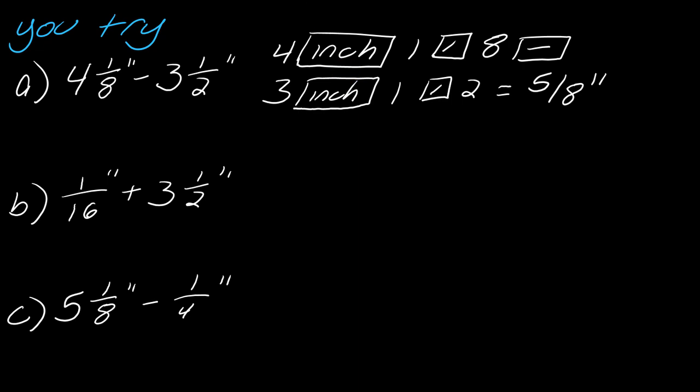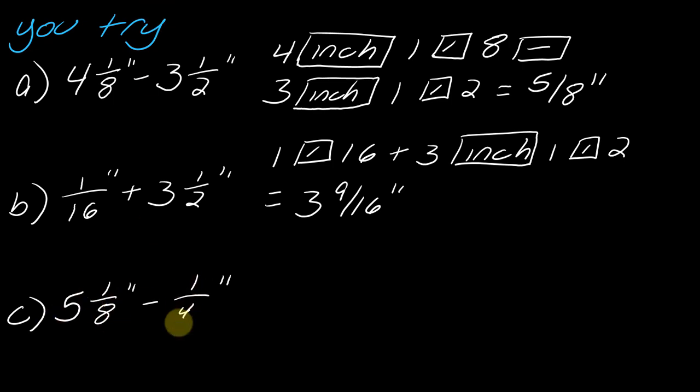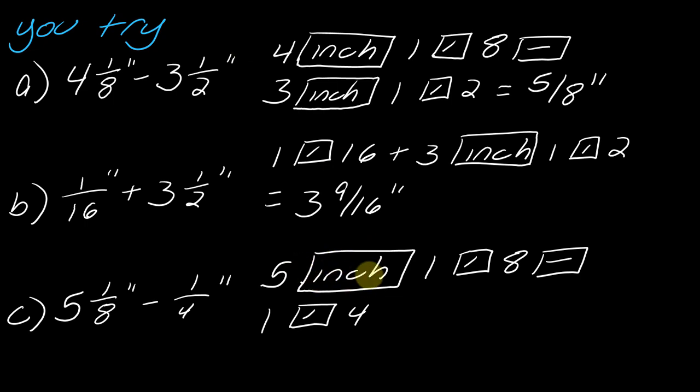Moving on to B. So now I have just one fraction and then a mixed number. So my calculations need to reflect that. So one sixteenth and then three inches and one half. So that's the entry that I need. And so then I get three and nine sixteenths inches. And then for this last one, once again, I have one mixed number and then one fraction. So when I enter those in, I've got the five inch. So I call the whole number and then I enter in the fraction and then subtract off the one fourth and I got four and seven eighths of an inch.